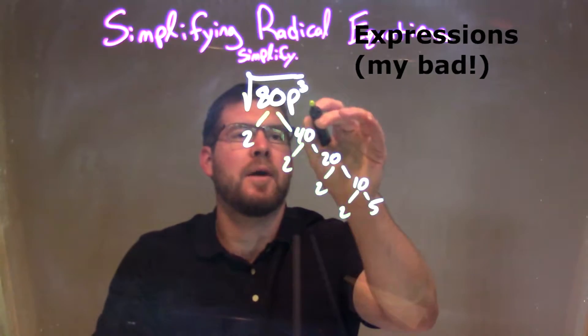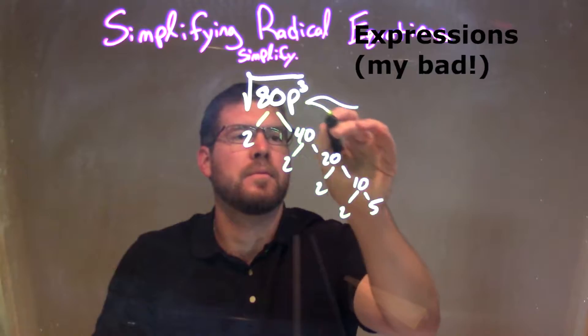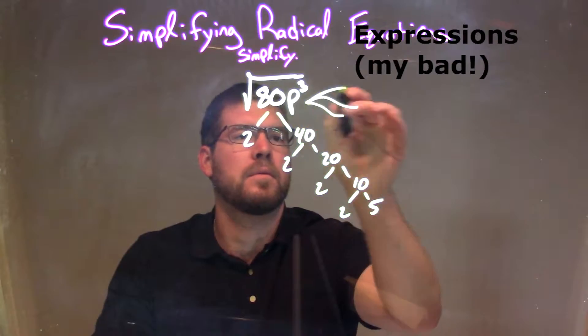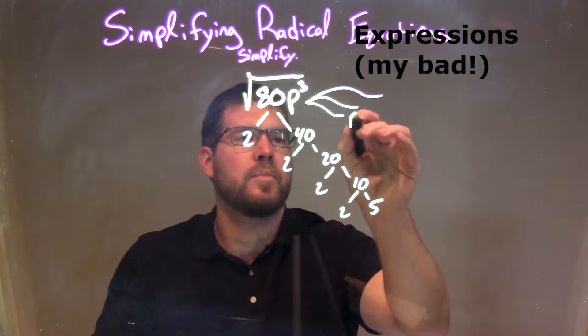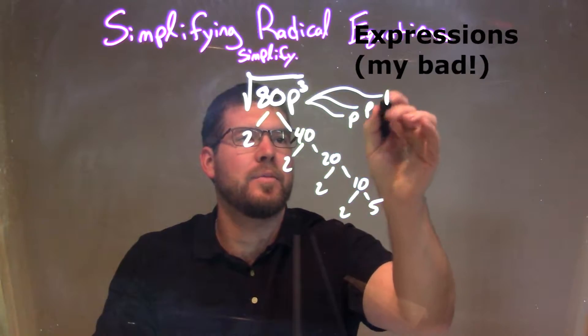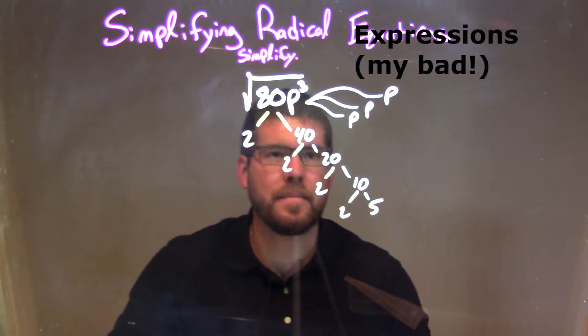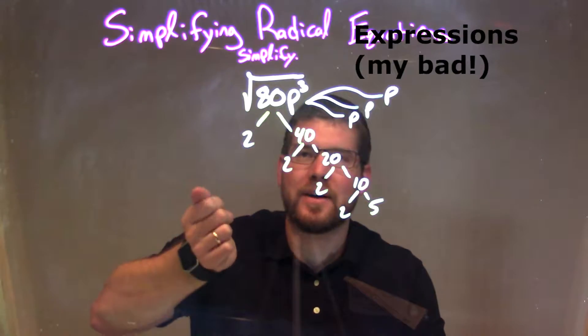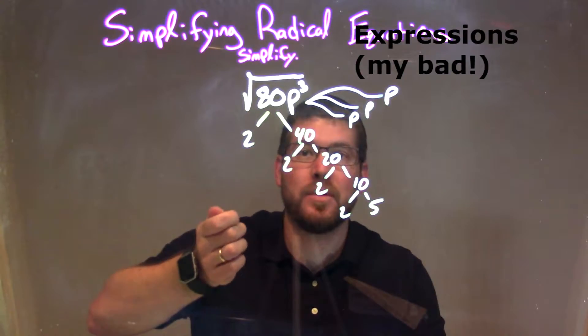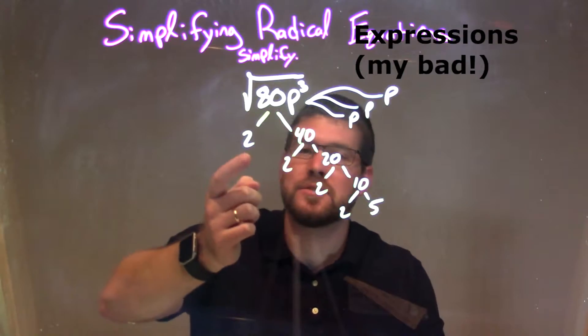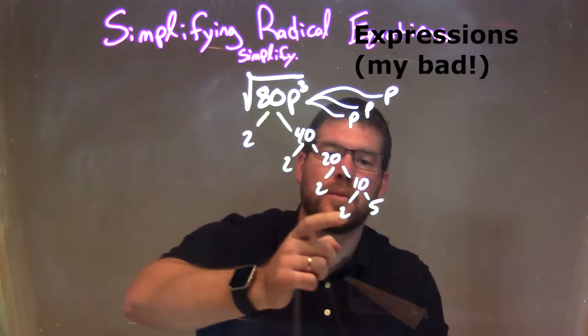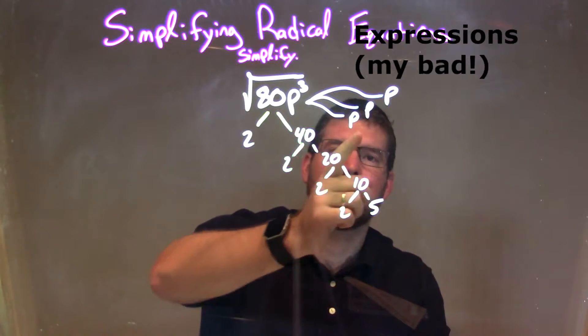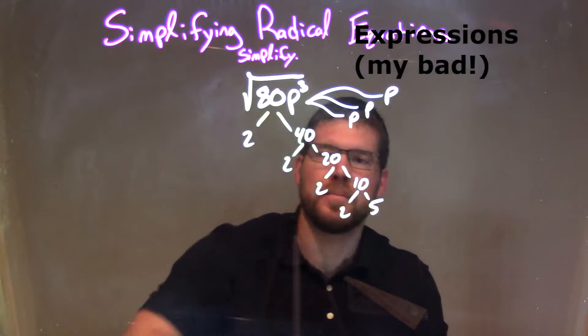p to the third power is just p times p times p. So I've done a prime factorization of 80p to the third power, which is 2 times 2 times 2 times 2 times 5 times p times p times p.